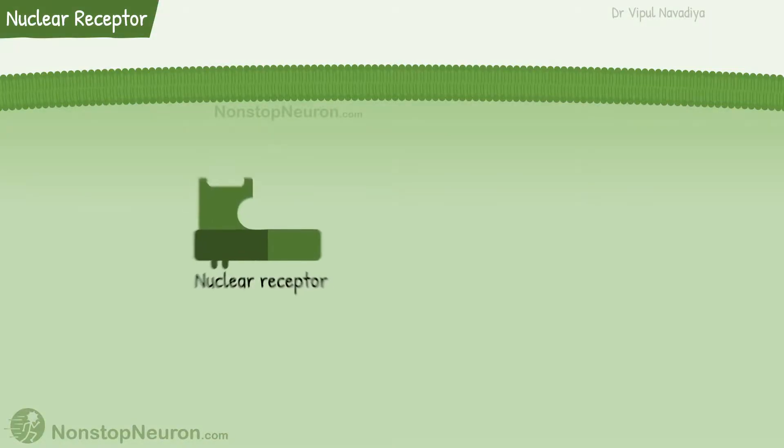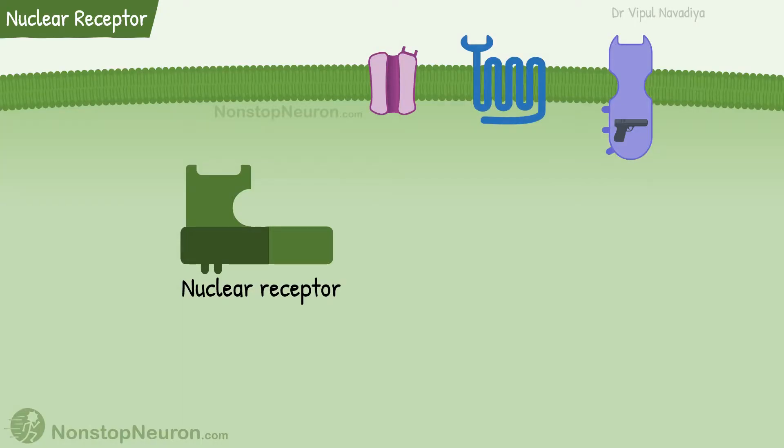First of all, these receptors are located inside the cell, in contrast to other types of receptors which are located on the cell membrane.